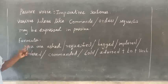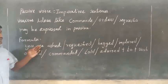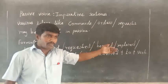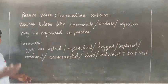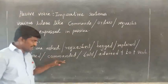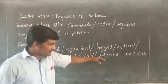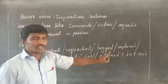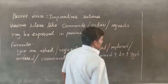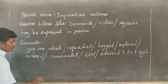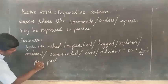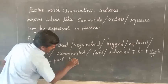Here I will give you the formula. To form passive voice for imperatives: 'You are asked,' or 'you are requested,' or 'you are begged,' or 'you are implored,' or 'you are ordered,' or 'you are commanded,' or 'you are told,' or 'you are advised' — after that we use 'to' plus the verb-one form. For example: 'Please post the letter.'